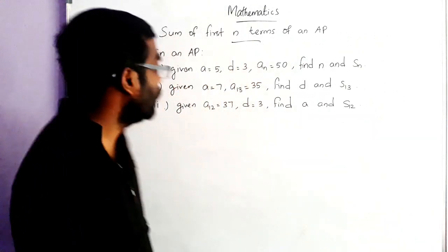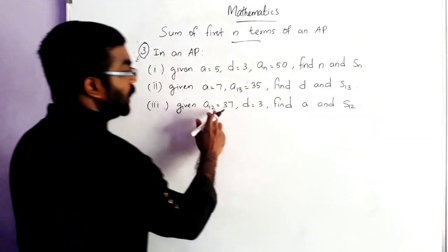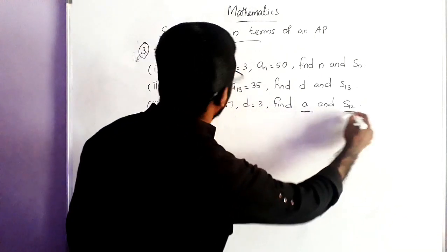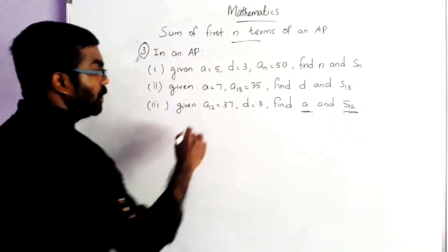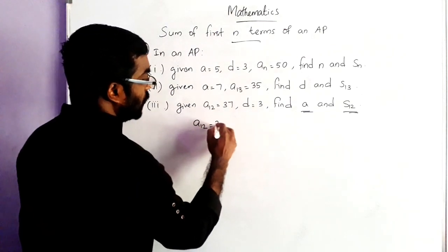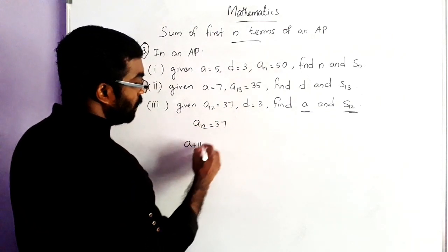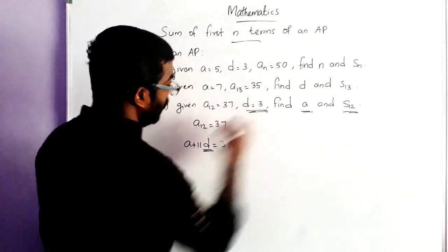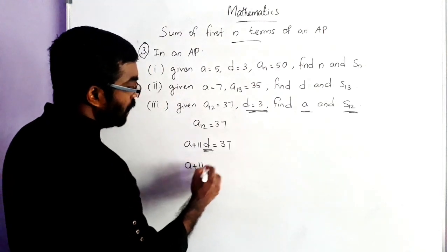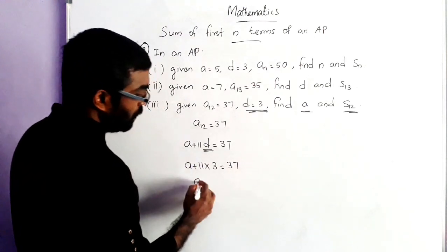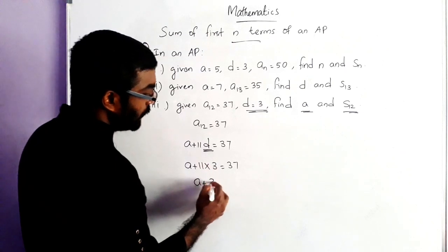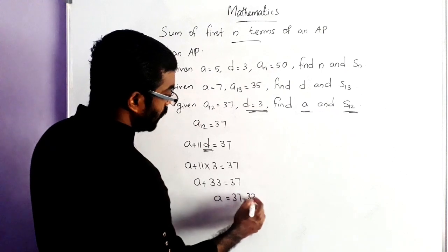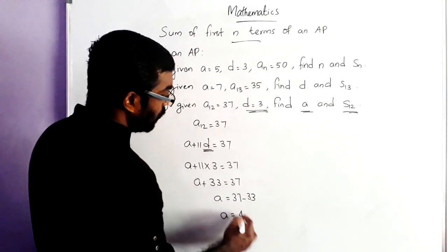Now we move on to the third sub-question. Given A12 is equal to 37, D is equal to 3, find A and S12. Here we can write A12 is equal to 37, that is A plus 11D is equal to 37. We replace the value of D, which is 3. So A plus 11 into 3 is equal to 37. A plus 33 is equal to 37. So A is equal to 37 minus 33, that is A is equal to 4.